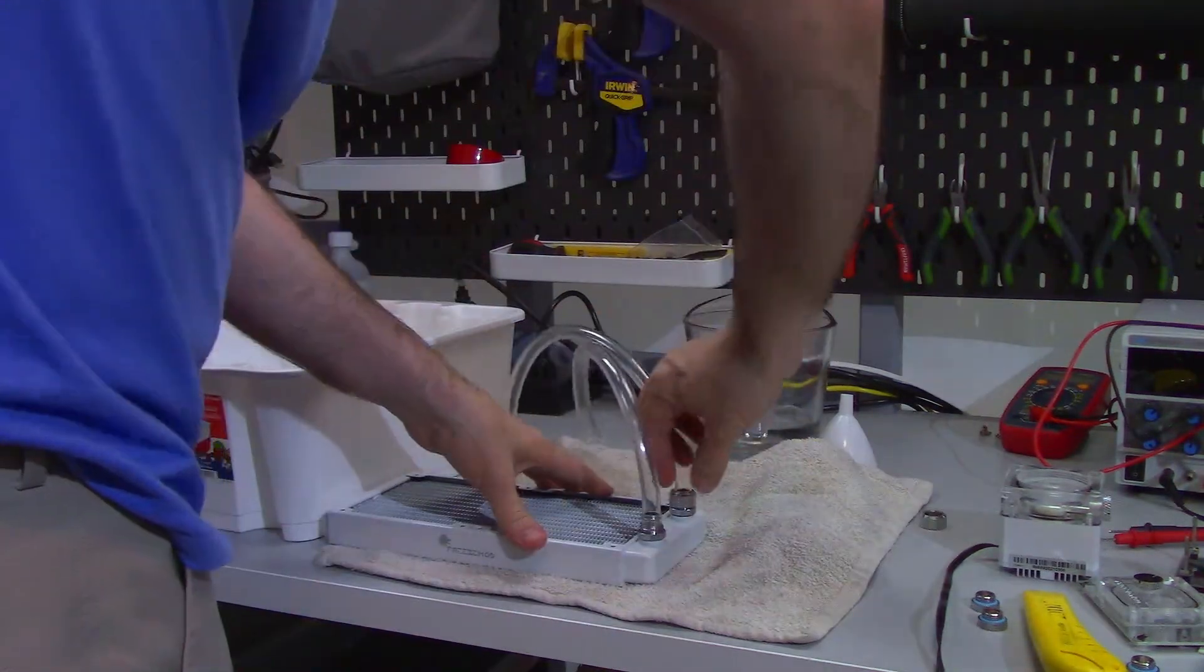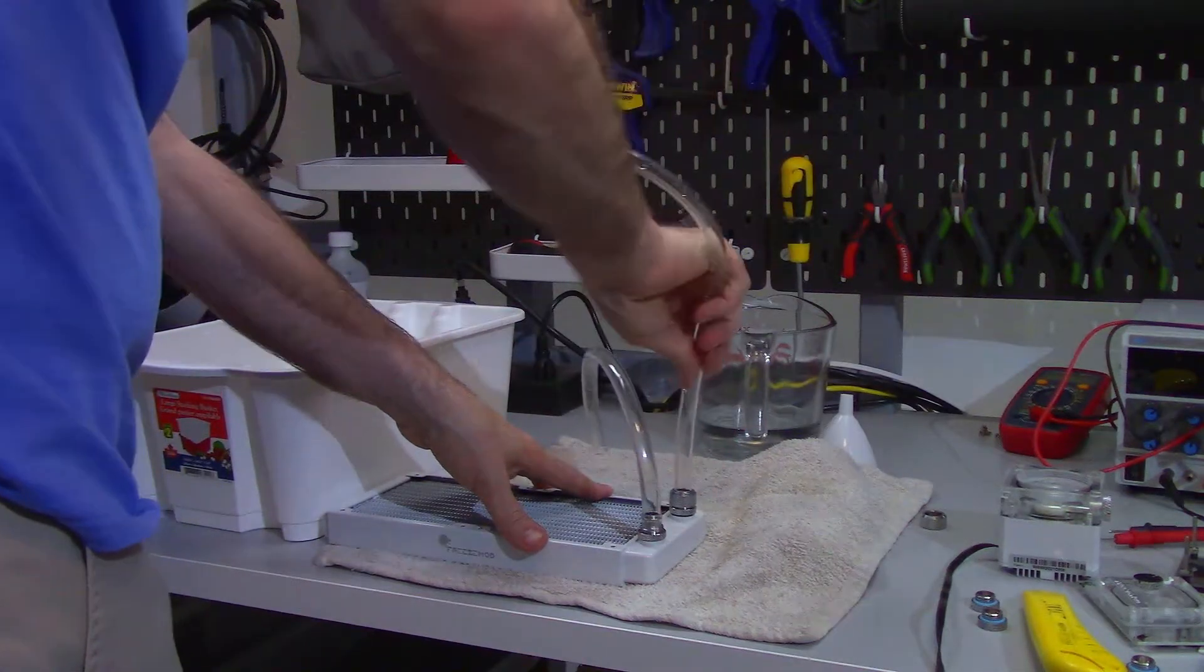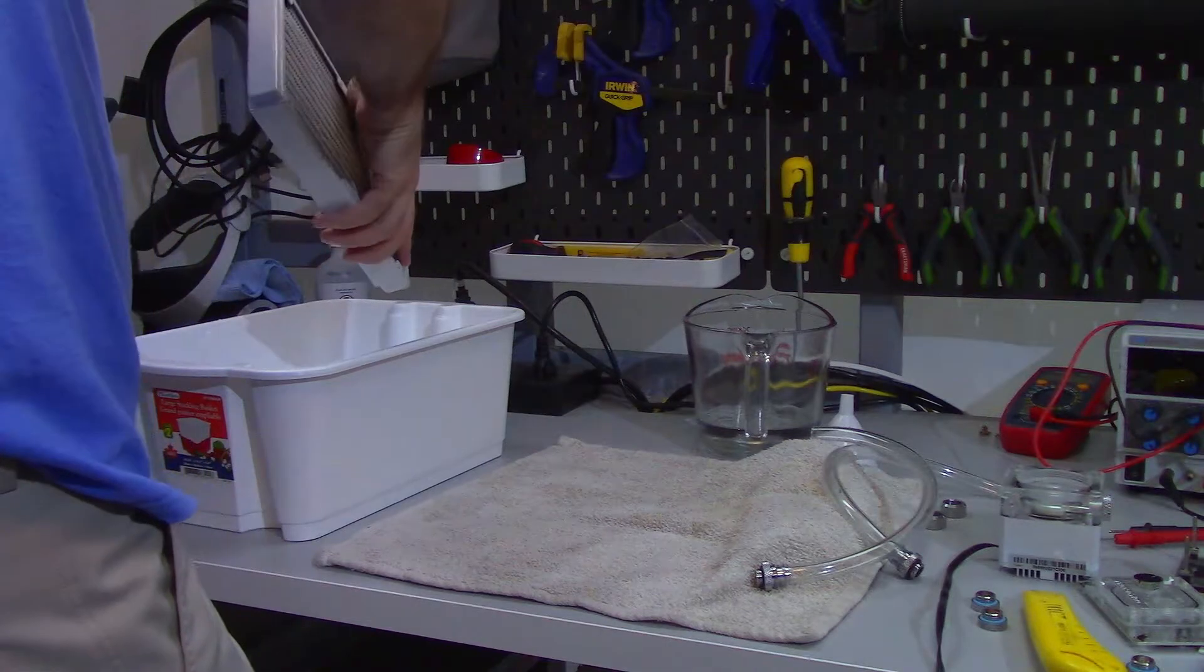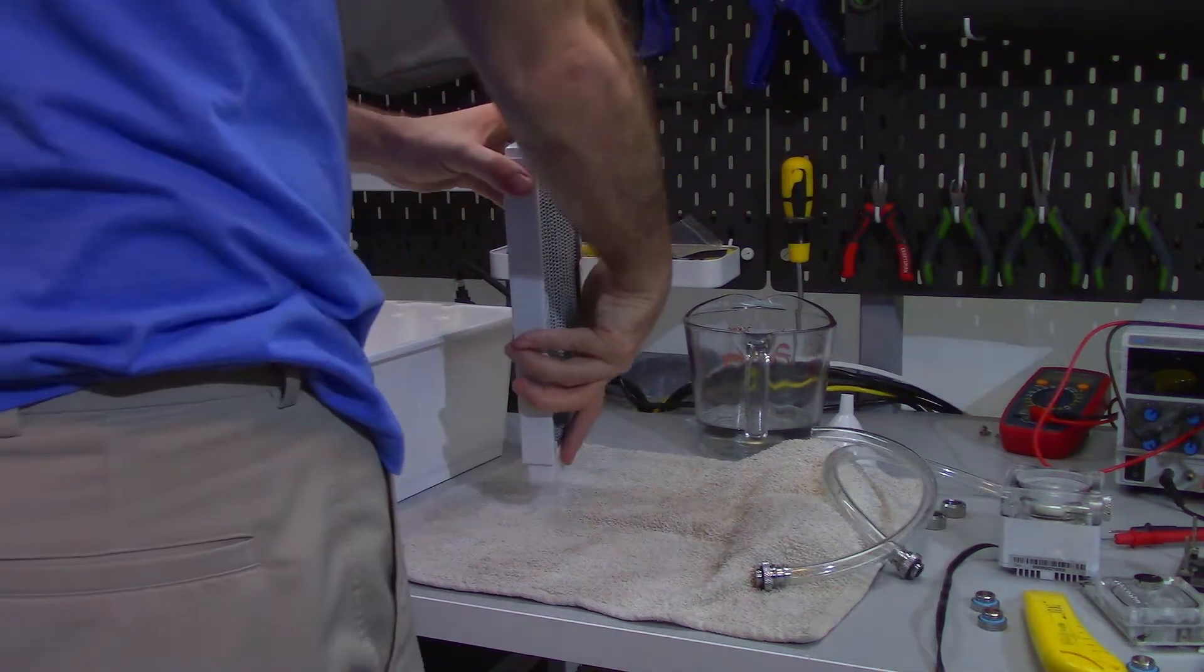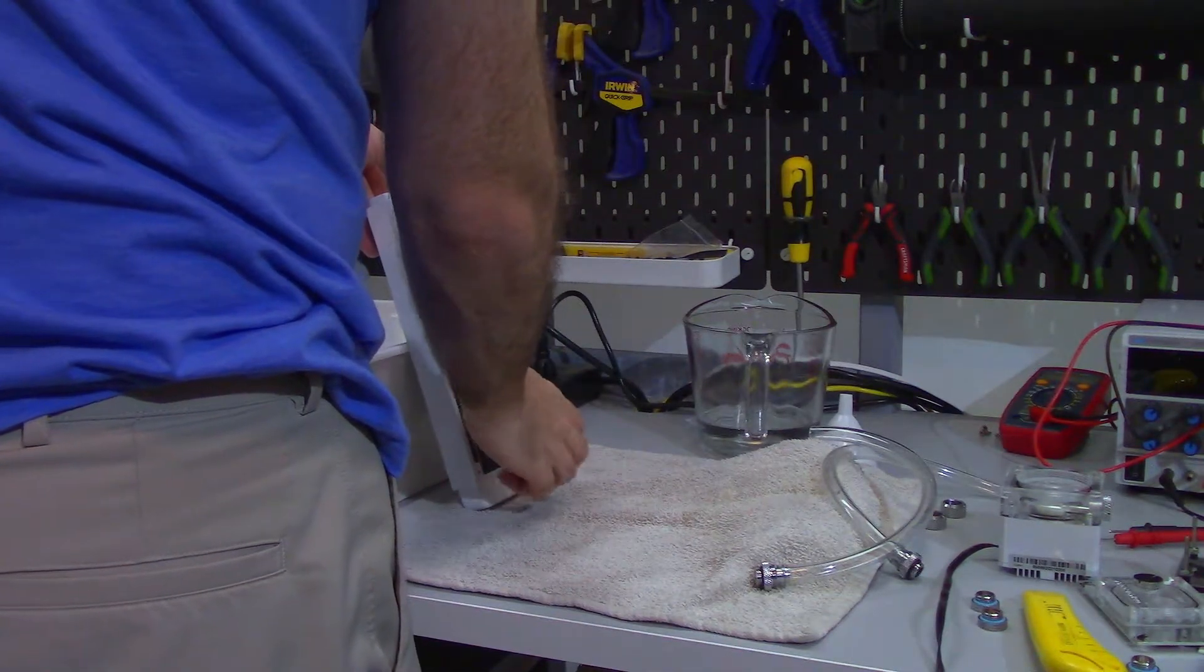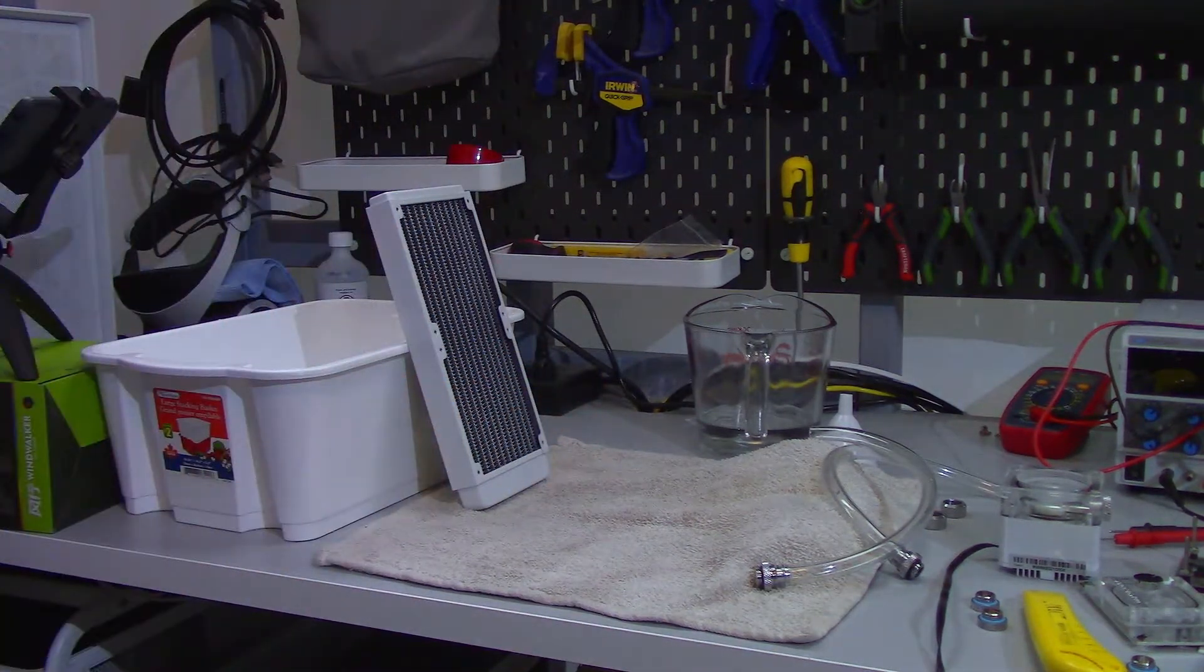Now that the radiator is mostly empty I'm going to remove the fittings and tubes. I'm just going to give it one last tip over to try to get out as much water as I can. Now I'll place the radiator thread side down against the bucket just to let all the water drip down and that's how you clean a radiator. It does take some time but it is pretty simple.